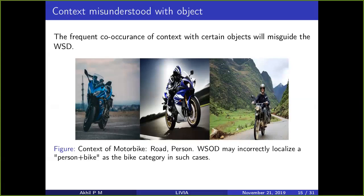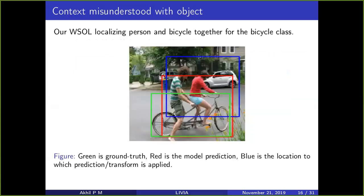Context is another challenge: certain object classes co-occur with contextual elements. For example, the bike category will always have a rider and a road. If you don't have precise bounding box annotations for what is a bike, the detector will localize everything as a bike — the person plus the motorbike together. In our experiments trying to localize the bicycle, we get the blue box as our detected location, the red as the output after our transform, and the green as the ground truth — and it localizes the person and bicycle together.